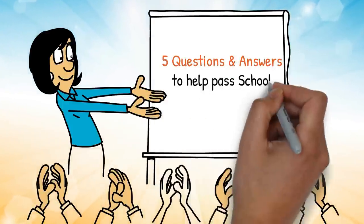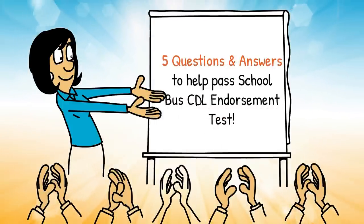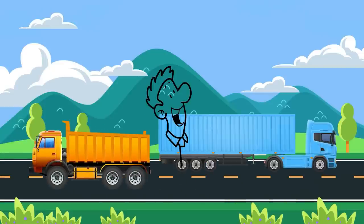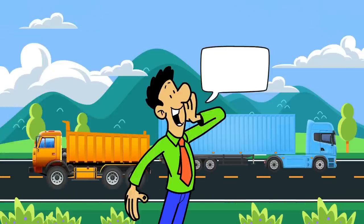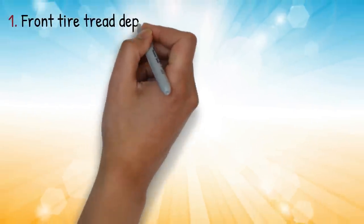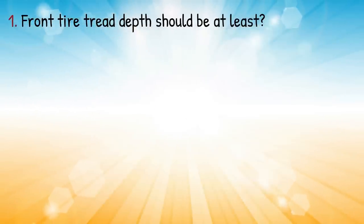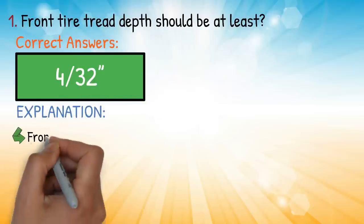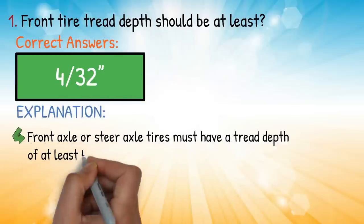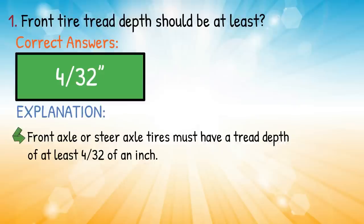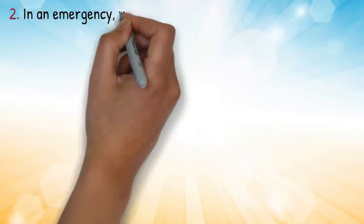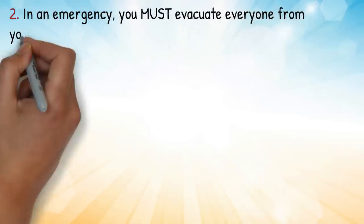Five questions and answers to help pass the school bus CDL endorsement test. Before we get started, please like and subscribe if you enjoy and would like more content about CDL education. Question one: front tire tread depth should be at least — correct answer: 4/32 of an inch. Explanation: front axle or steer axle tires must have a tread depth of at least 4/32 of an inch.